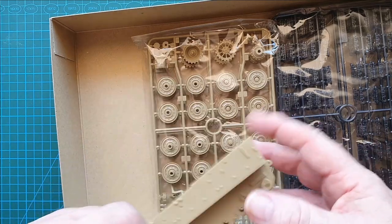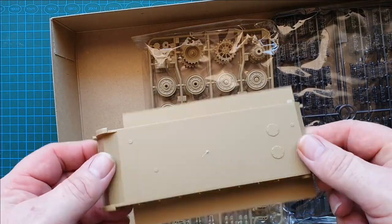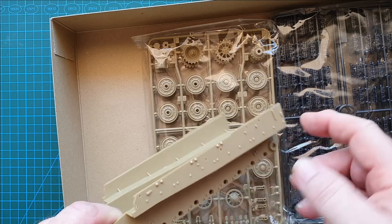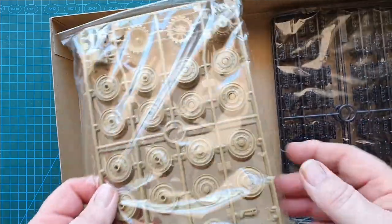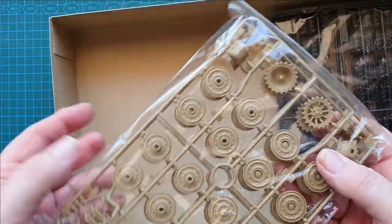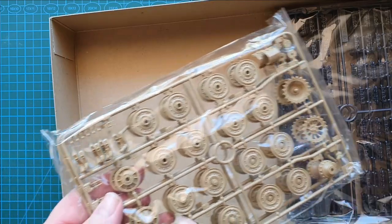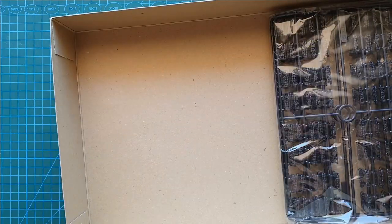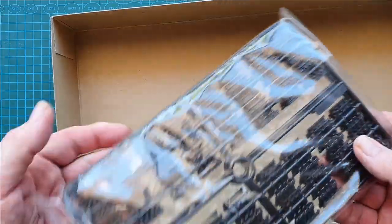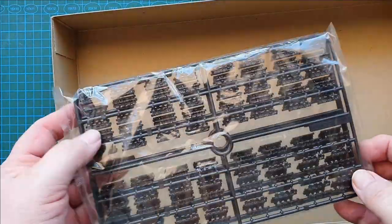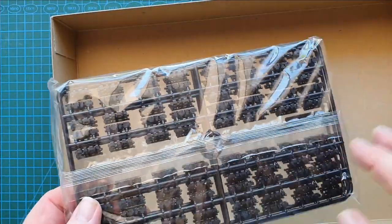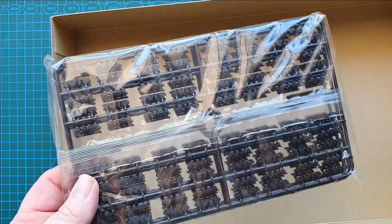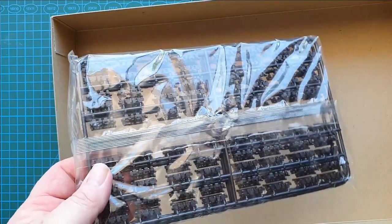Next is the actual bottom of the hull with some very outstanding bolt detail. Then we've got two sprues exactly the same - drive sprocket, idler wheel, running wheels, etc. And then three sprues with individual track links. You'll get a really nice track sag with these individual links.